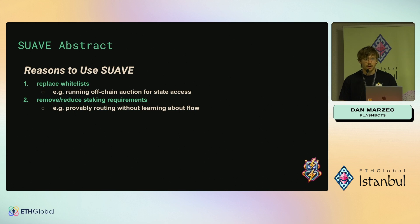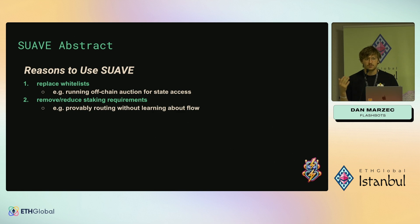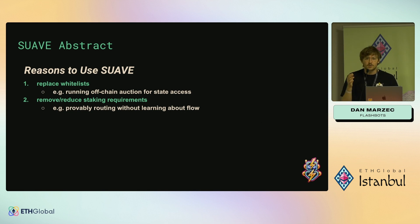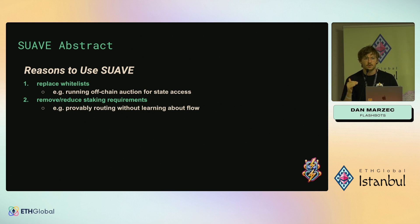Remove or reduce staking requirements. Some solver platforms are unable to properly enforce correct behavior, so they resort to slashing. In some of the most popular cases, like solving for example, there are over $100k USD requirements to stake in order to participate. Using a credible computation platform where we can ensure that a submitted solution is correct and obeys the rules of the protocol, we can lower staking requirements and create a more competitive market.